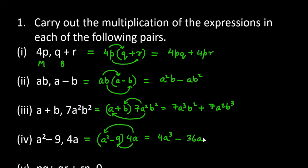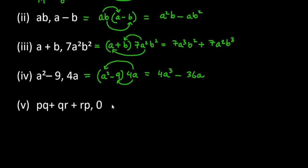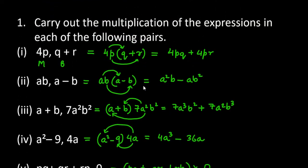Now the last part, it is pq plus qr plus rp, we will multiply this and multiply with 0. So any number times 0 is 0 only, because if you multiply 0 with pq it will be 0, 0 with qr it will be 0, rp with 0 will be 0. So if we have three zeros and in between we have addition, it will be 0 only. Any number times 0 is 0. So this is the answer for question number one of exercise 9.3.